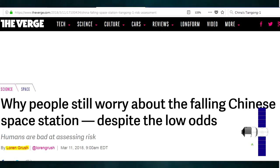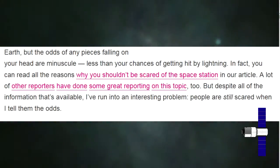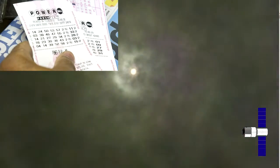So, enter Lauren Grush, a writer over at The Verge, who points out that humans are basically really bad at assessing risk. And I quote, yes, the module is a bit bigger than most satellites that fall back to Earth, but the odds of any pieces falling on your head are minuscule. Less than the chances of you getting hit by lightning. In fact, some other writers are saying that it's equivalent to winning the powerball lottery. Twice.